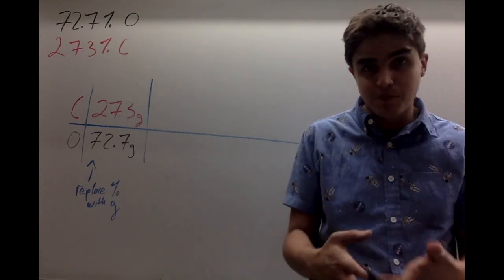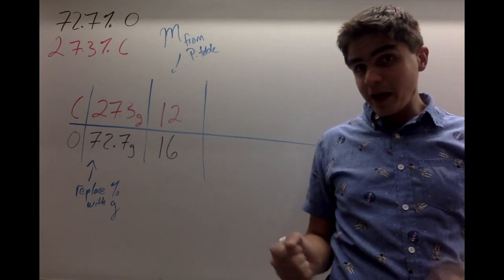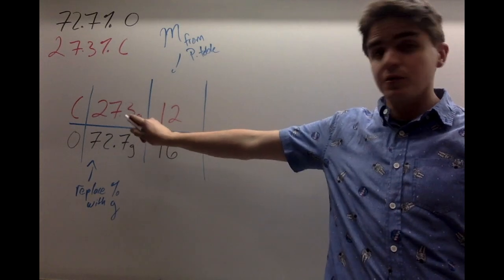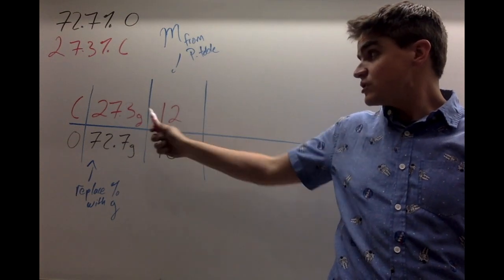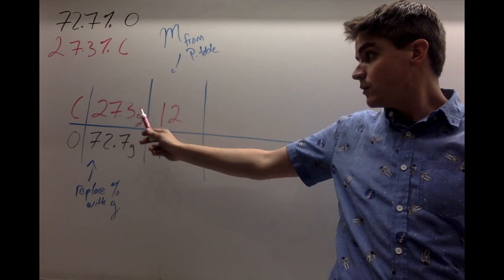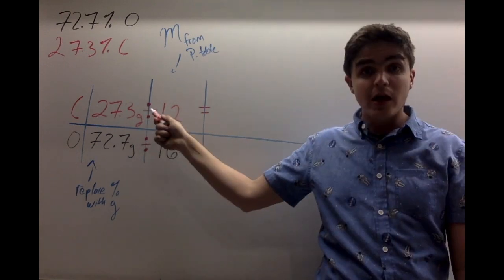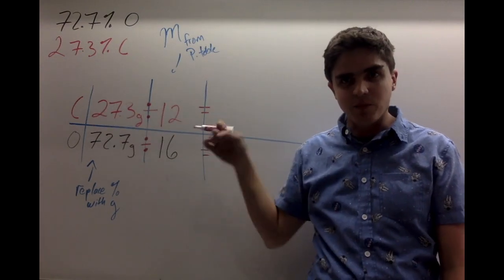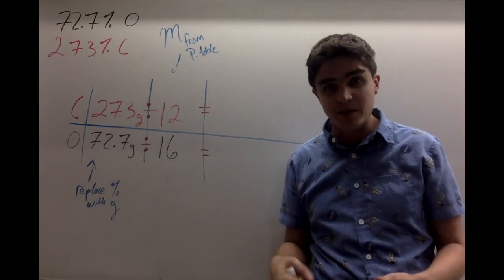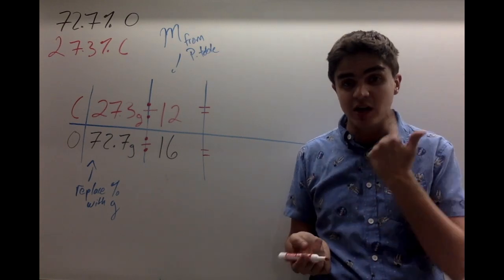So now I've got the molar mass in the periodic table, and I just need to take this cell here and divide it by that cell there. So divide signs show up right here, and what I'm going to do here is I'm going to take this cell and divide it by the top one. So it's going to be 27.2 divided by 12, and the 72.7 divided by 16, which gives you some numbers you can get out of your calculator.